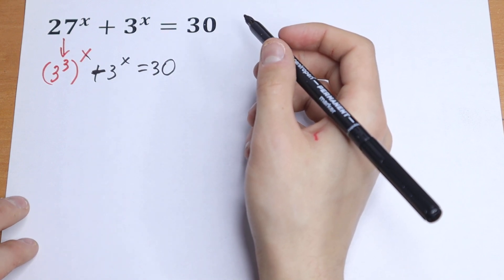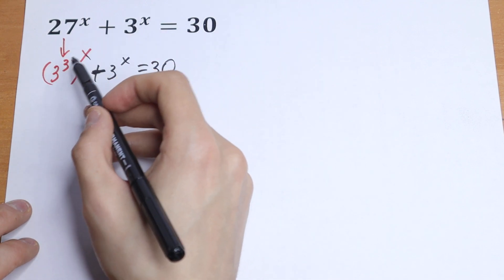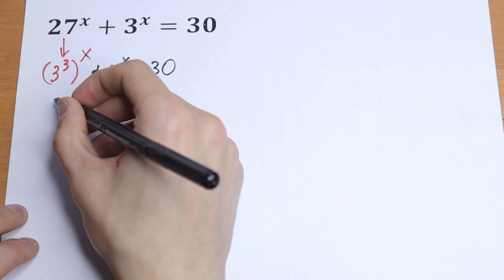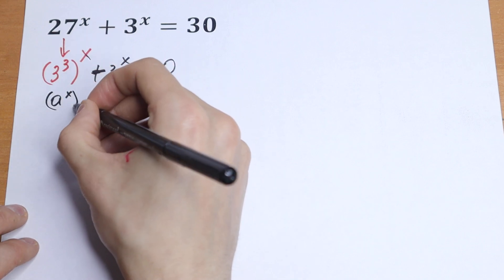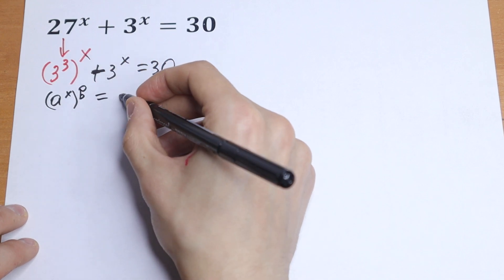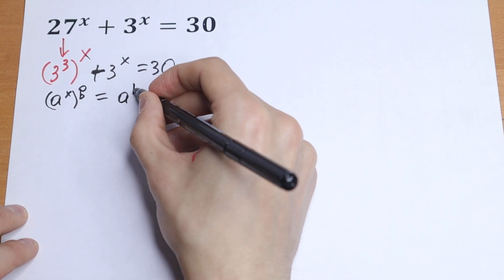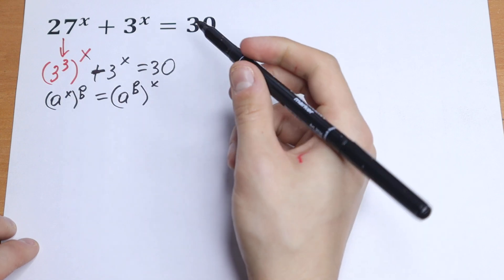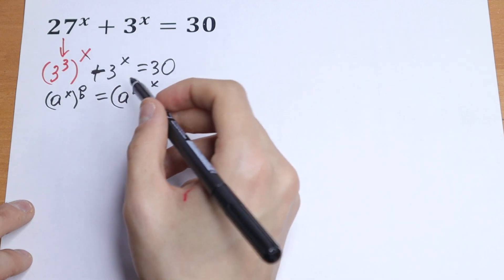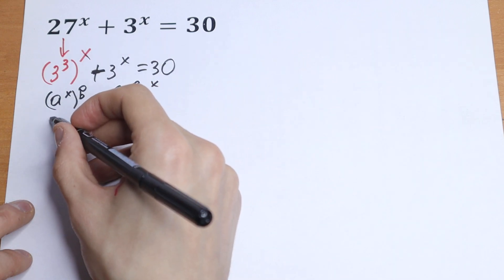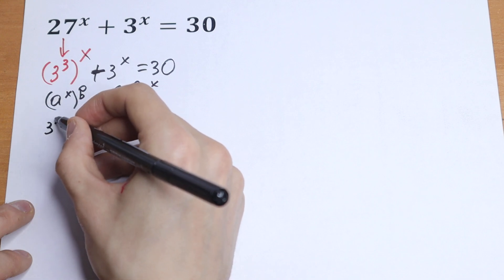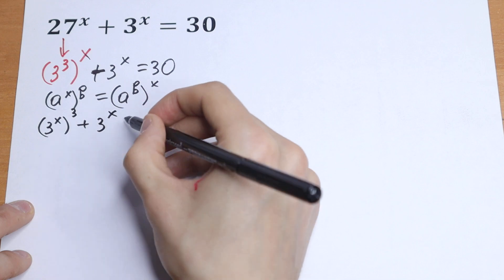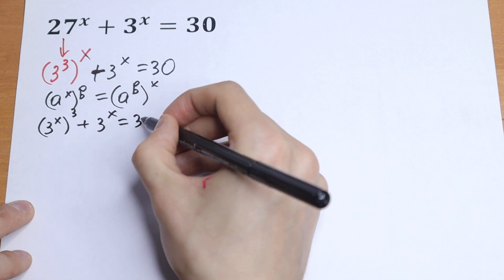What are we going to do next? Of course we can swap these exponents, these powers, because we know the rule of interchange. If we have a to the power x raised to the power b, we can write it as a to the power b raised to the power x. Using this rule, this can be written as 3 to the power x, cubed, plus 3 to the power x, equals 30.